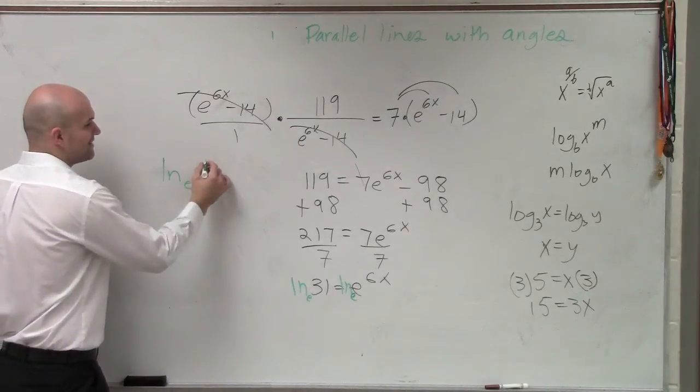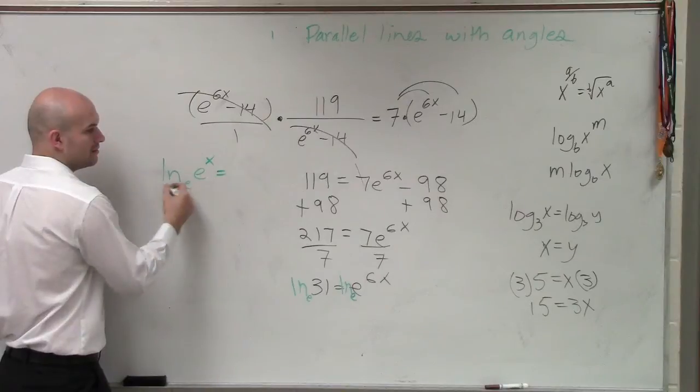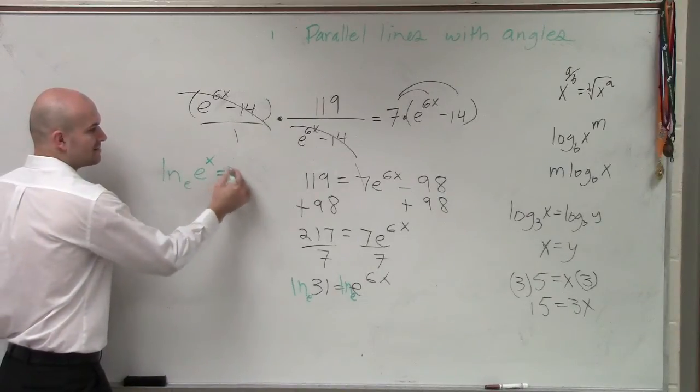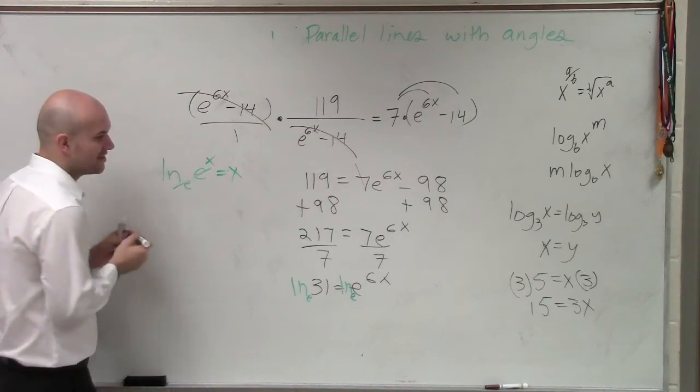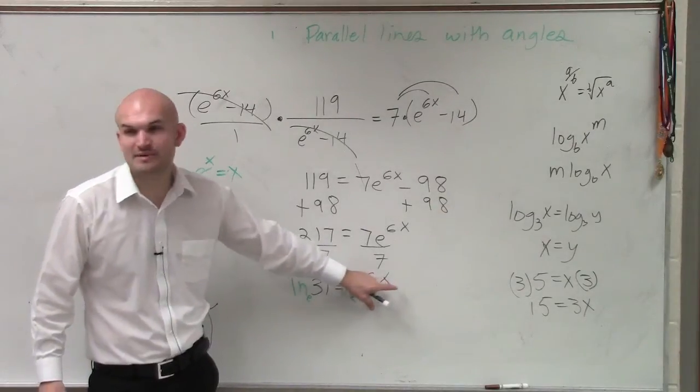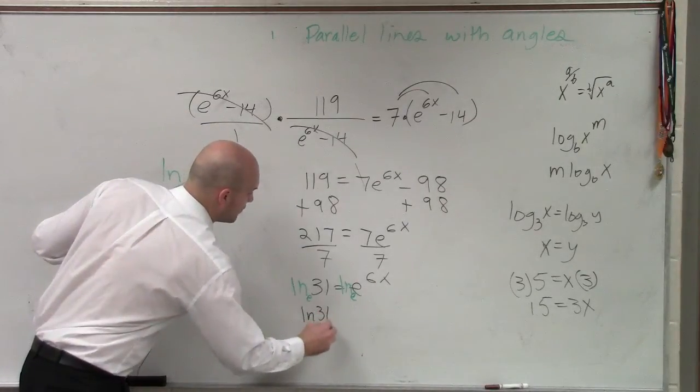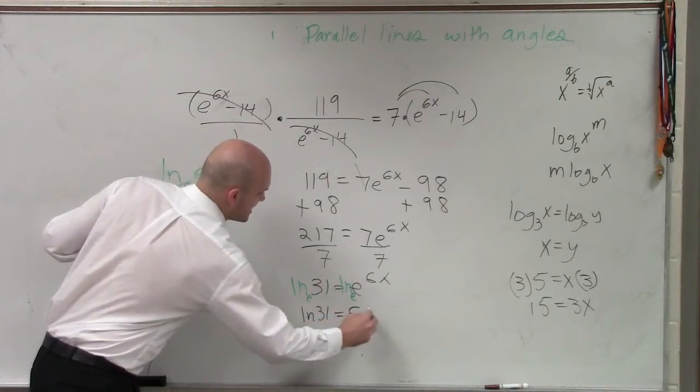And if I add that to the x, that's equal to x, right? That's your property log. So therefore, guess what? I have ln base e of e. That's now just going to be equal to 6x. So now my problem is ln of 31 equals 6x.